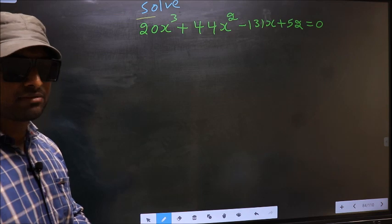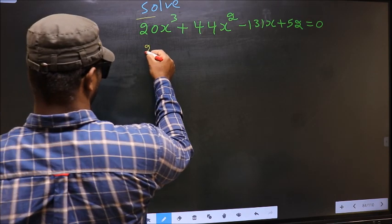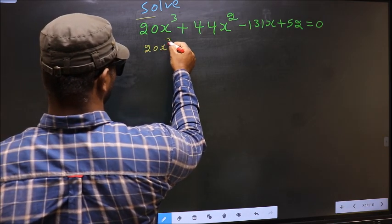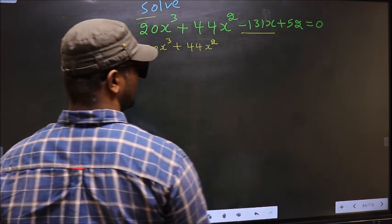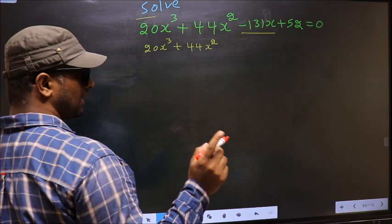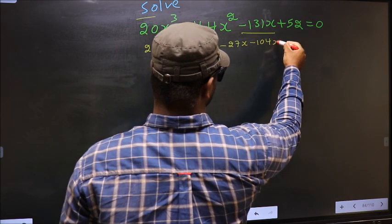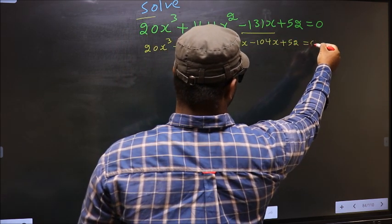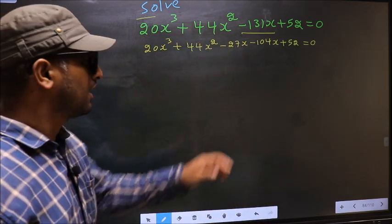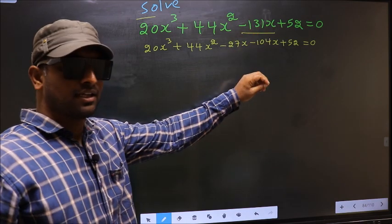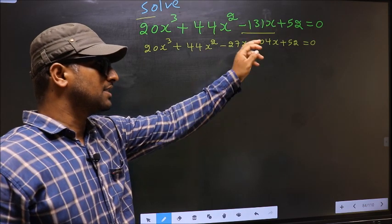For that, we have to change the x term. In place of -131x, I write -27x - 104x. So the equation becomes 20x³ + 44x² - 27x - 104x + 52 = 0.